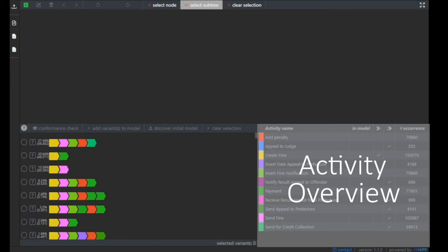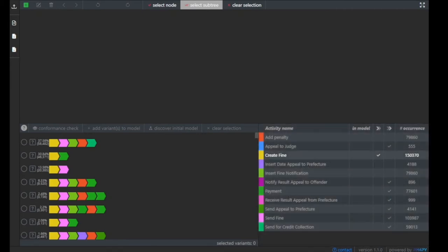We see various statistics on the different activities. For example, the activity create fine is a start activity and it occurs over 150,000 times in our event log. The activity appeal to judge is a potential end activity. Often the process instances end with this activity and it occurs in total 555 times in our event log.